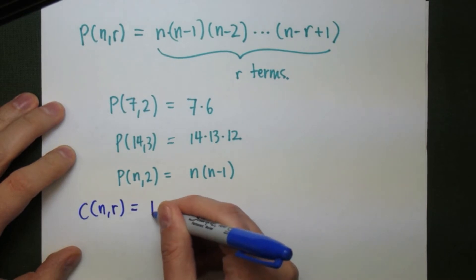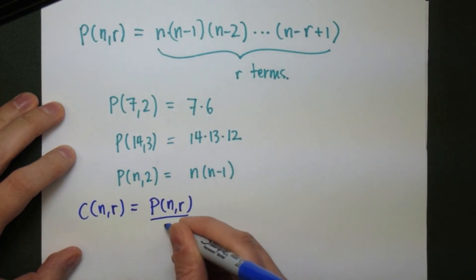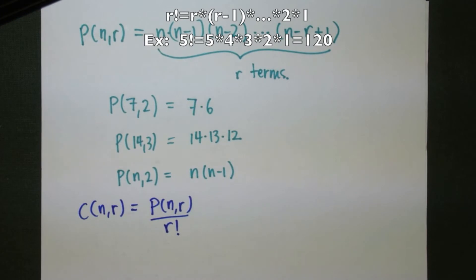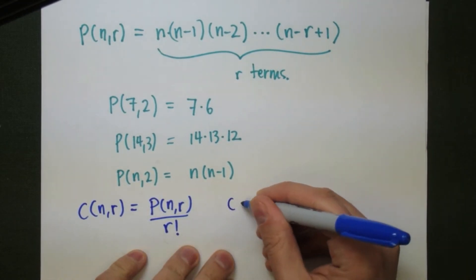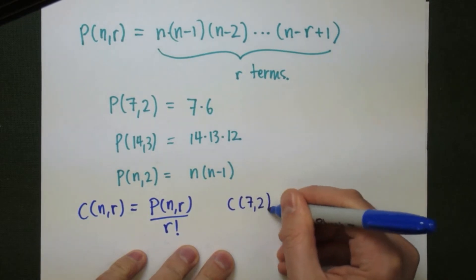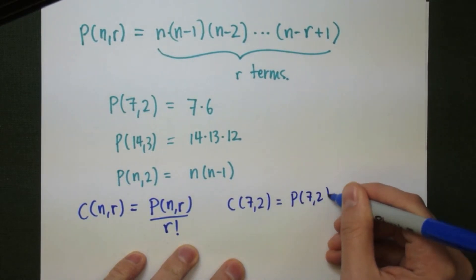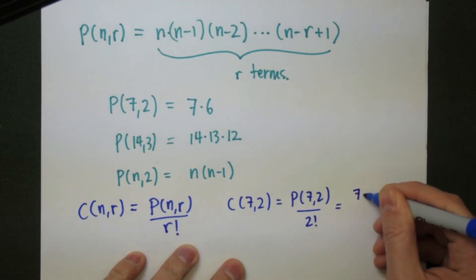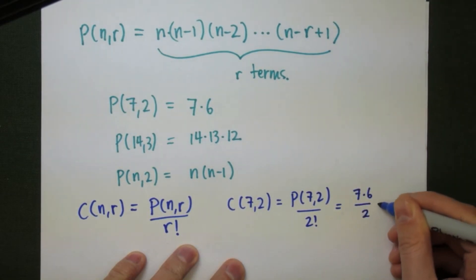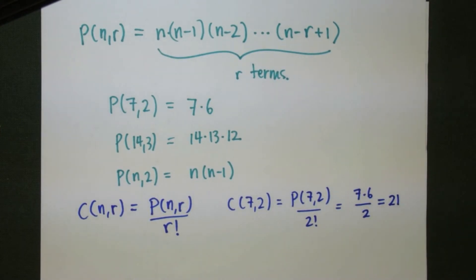Looking at C(n,r), the formula is going to be the permutations divided by r factorial — that's the product of all the numbers up to r. As an example, let's take a look at C(7,2). This is going to be P(7,2) divided by 2 factorial, which is 7 times 6 over 2 times 1, or 42 divided by 2, which gives us 21.